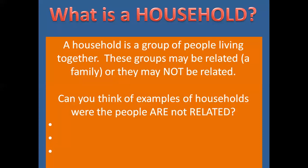Can you think of some examples of households where the people are not related at all? A few examples could be a student house where students go to university and live together, or if you're working and you live with a flatmate or housemate. A third example would be a household of children without parents who are not fostered or adopted, living together looked after by carers.